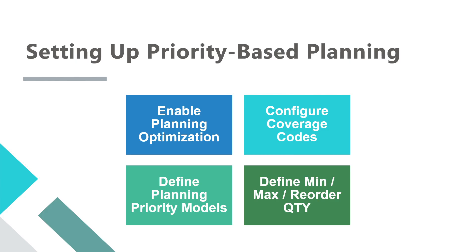To set up priority-based planning we need four parameters. First, we need Planning Optimization, because this feature doesn't work with the deprecated planning engine. The next one is a coverage code — you need a coverage group with coverage code equal to 'priority'. Then we need the planning priority model, where you define what to order and whether to have one planned order or split orders depending on the priority. The last one is minimum, maximum, and reorder point, which you need to set up at the item level.